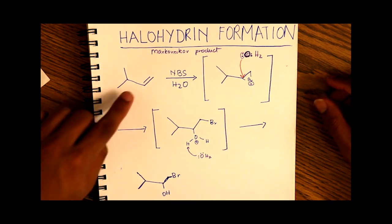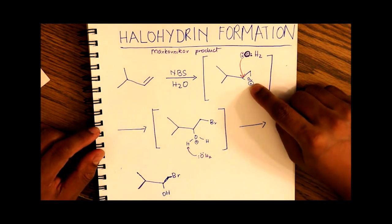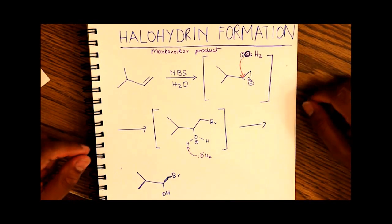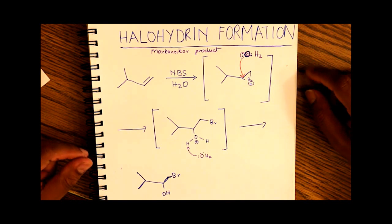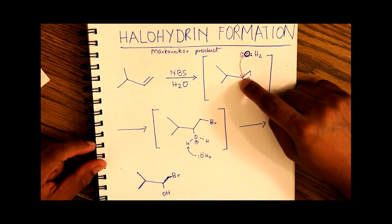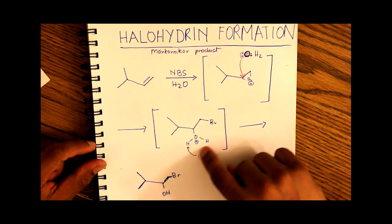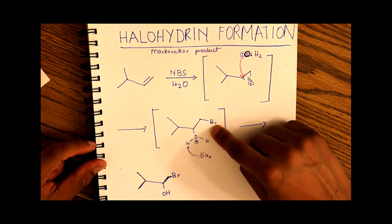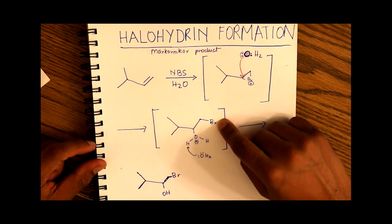What we end up with is a bromonium ion in place of the pi bond. Now the oxygen in water, which is a stronger nucleophile, is free to attack the secondary carbon, which leaves us with a hydronium ion on the secondary carbon, and bromine gets pushed back to the primary carbon.